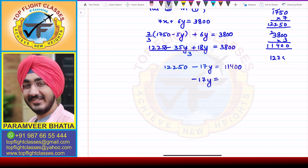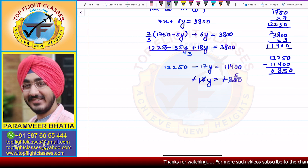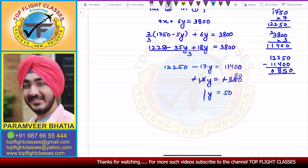So from here I get −17y = 11400 − 12250, which gives −17y = −850. The negatives cancel, so 17y = 850, and dividing: y = 50.